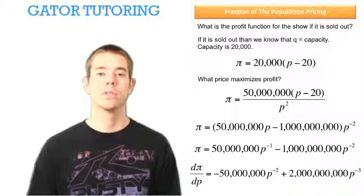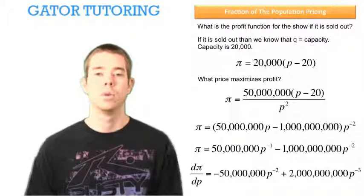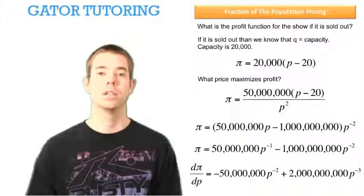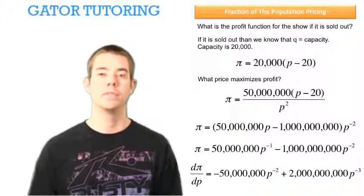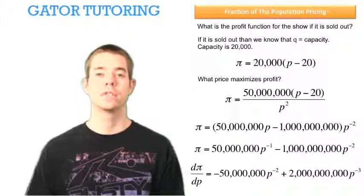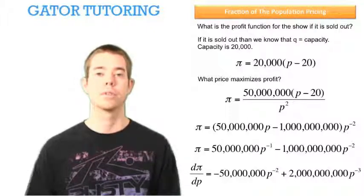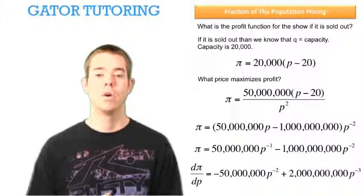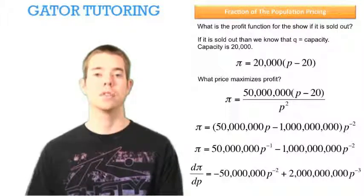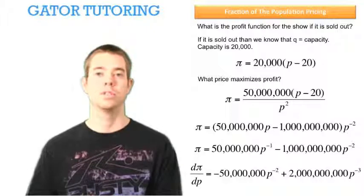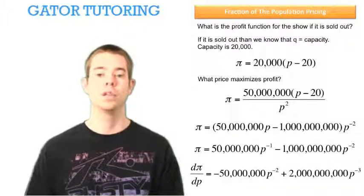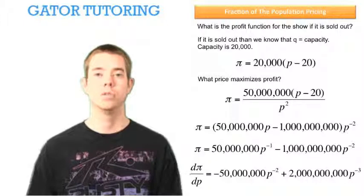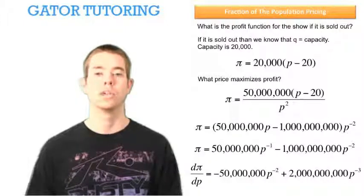Now I'm ready to take my derivative with respect to P. Well, my first component here is going to be 50 million times negative 1, which was the exponent. So negative 50 million P raised to the negative 2 because I subtract 1 from the exponent. And my second component, likewise, it's going to be 1 billion times negative 2. So that's a negative 1 billion times a negative 2, which gives me a positive 2 billion now times P to the negative 3. Because that P to the negative 2, we subtract 1 from the exponent to get P to the negative 3.